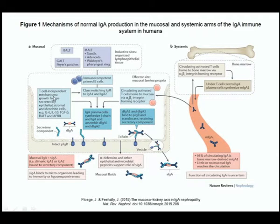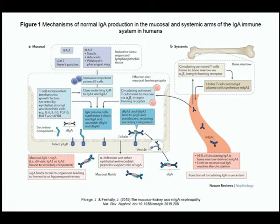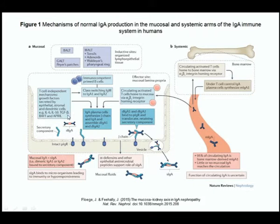A third mechanism is T cell-independent innate immunity involving growth factors secreted by epithelial, stromal, and dendritic cells. Food allergens or intrinsic intestinal diseases like celiac disease are involved here, with epithelial, stromal, and dendritic cells participating through release of cytokines and growth factors such as IL-6, IL-10, TGF-beta, BAFF, and APRIL.